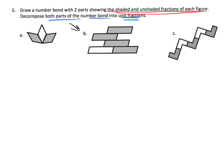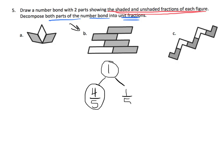The first thing it says is write a number bond for the shaded and unshaded. Here's my one whole. The shaded — one, two, three, four, five — it's out of five, and it's four out of the five. So, shaded is four fifths, and the unshaded is one fifth.